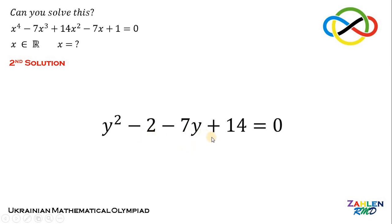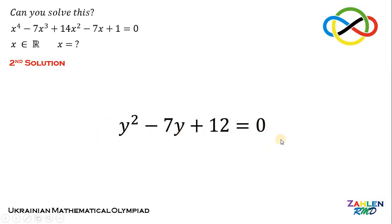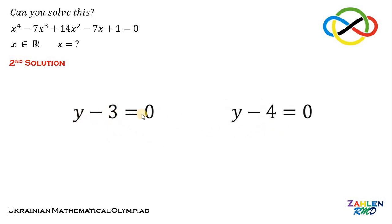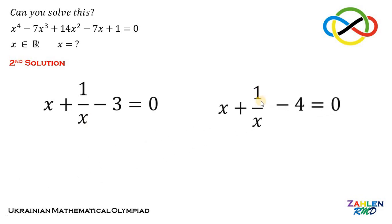Substituting, negative 2 plus 14 gives positive 12, so we have y squared minus 7y plus 12 equals 0. This factors as (y minus 3)(y minus 4) equals 0, so y minus 3 equals 0 or y minus 4 equals 0. Recalling that y equals x plus 1 over x, we substitute back into each case.